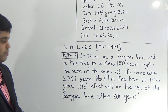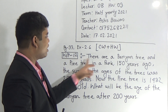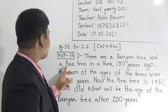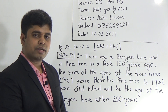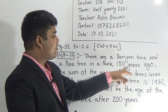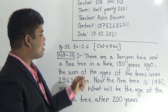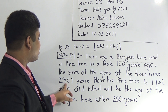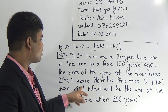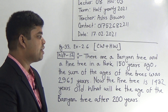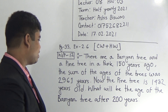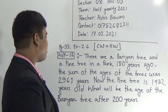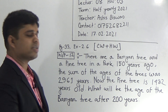At first, we read the question. Problem 12: There are a banyan tree and a pine tree in a park. 150 years ago, the sum of the ages of the trees was 2,961 years. Now, the pine tree is 1,432 years old. What will be the age of the banyan tree after 200 years?